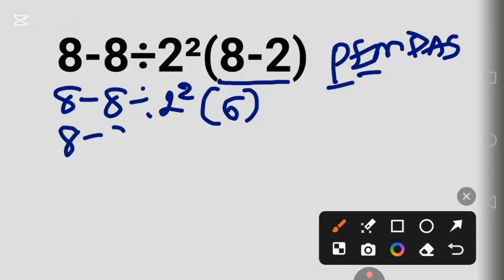8 minus 8 divided by 2 squared is 4, in parentheses 6. The next thing is multiplication. After that is division. Both multiplication and division have the same priority, they have equal priority. Because of that, we'll solve from left to right.